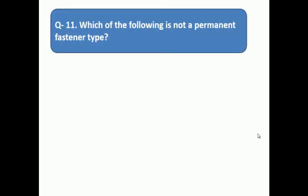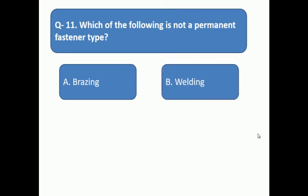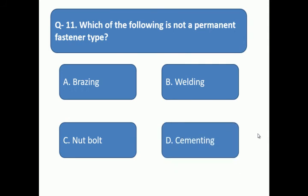Question 11: Which of the following is not a permanent fastening type? Which is not a permanent type of joint? A: brazing, B: welding, C: nut bolt, D: cementing.